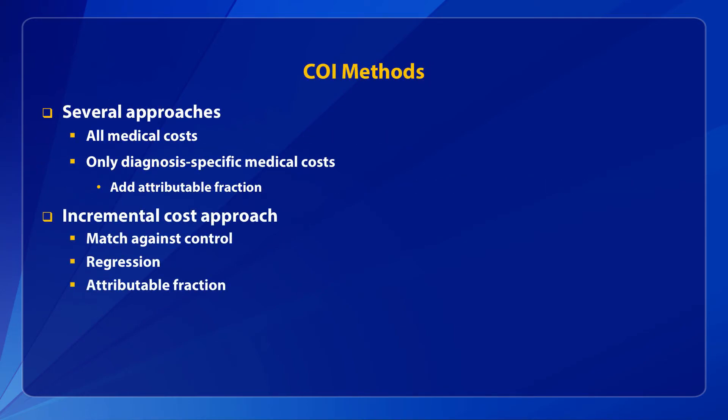There are several approaches for measuring cost-of-illness. You can total all the medical costs for the population of interest — for example, a group of people with hypertension. Or, you can add only hypertension-specific medical costs for that group. Or, by matching cases to controls or running regression analyses, you can assess the incremental or marginal medical costs for people with hypertension compared to a non-hypertensive group. Following are more detailed descriptions of these three methods and their pros and cons.